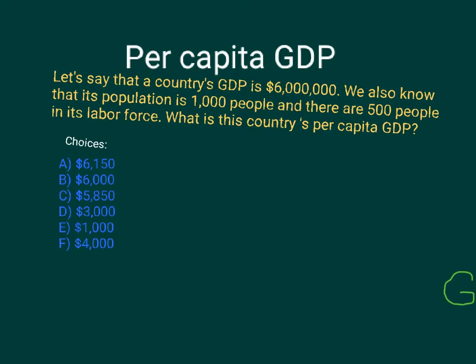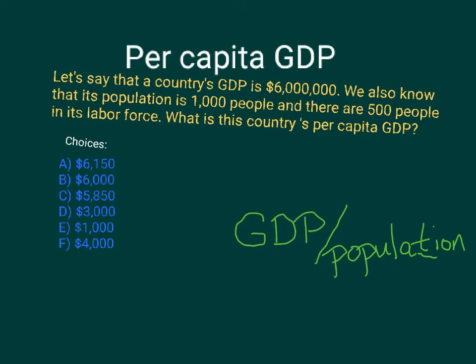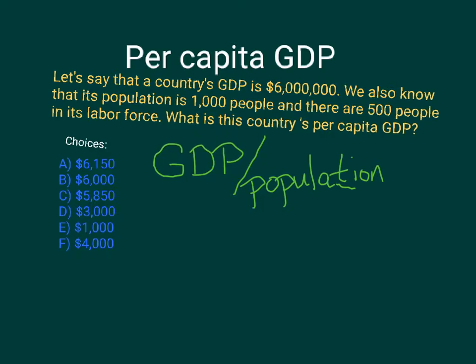In order to calculate this, we need the definition of per capita GDP. The definition of per capita GDP is GDP divided by population. So now it's easy — let's do that division. GDP is 6 million.